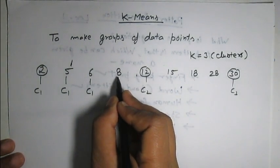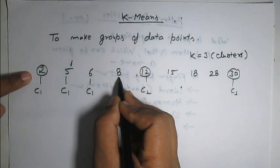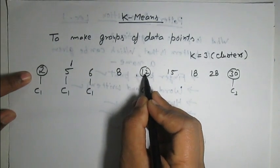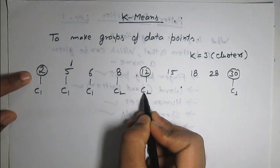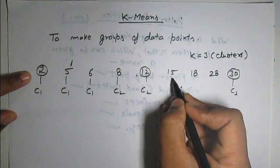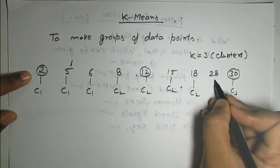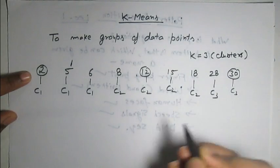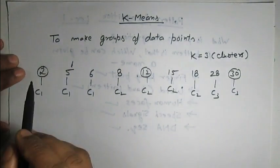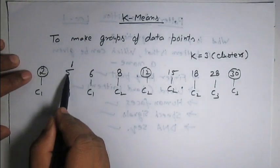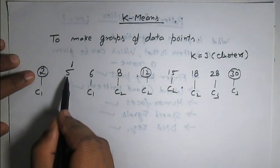Now consider this 8. The distance of this point from 2 is 6 and the distance from 12 is 4, so obviously this point will be assigned the label of C2. Similarly, 15 and 18 will also be assigned C2, and 28 will be assigned C3. We are calculating the distance of every point from each cluster center and assigning the label of the cluster center which is closest to it.